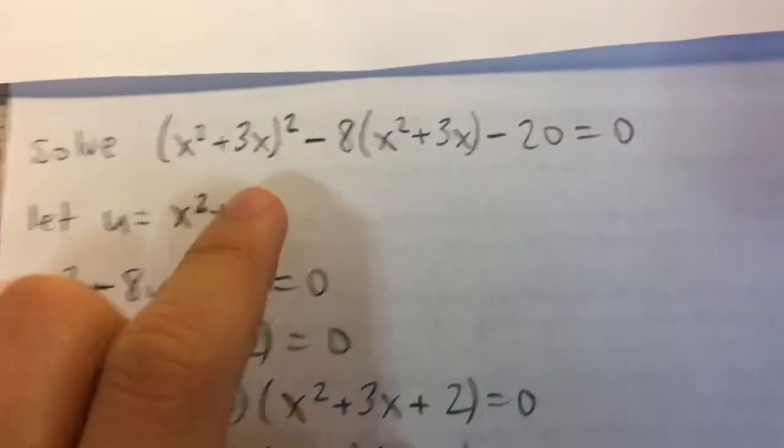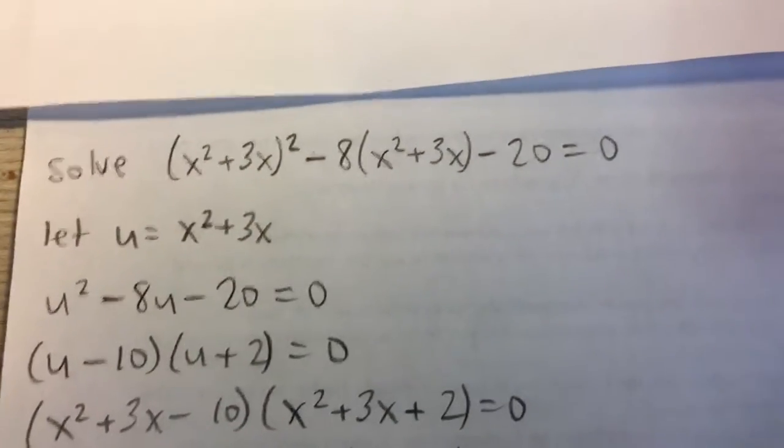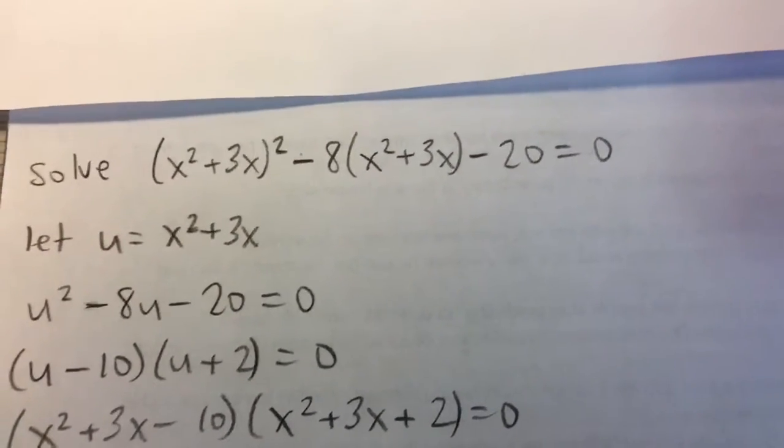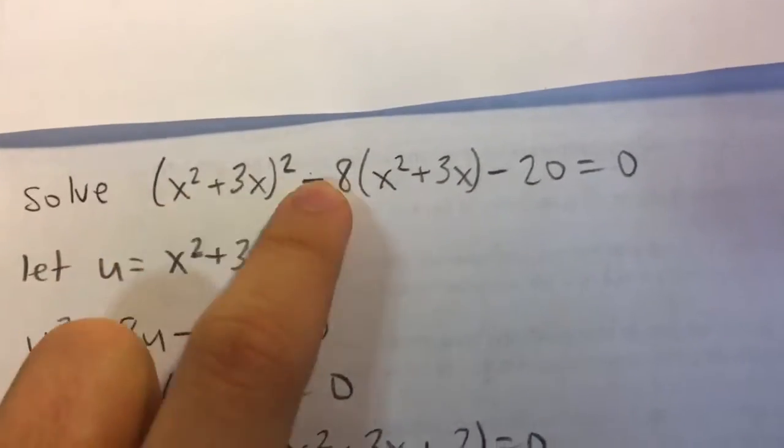Solve (x²+3x)² - 8(x²+3x) - 20 = 0. You can see right here we have a fourth-degree equation, actually, because we have x squared being squared.